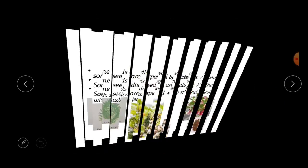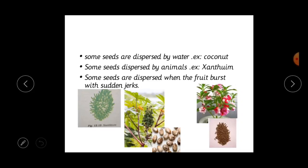Dispersal through water: some fruits or seeds develop a floating ability in the form of a spongy or fibrous outer coat, as in the case of coconut. The fibrous outer coat of coconut helps it float on water. Some seeds are also dispersed by animals — for example xanthium, which has spiny seeds with hooks that get attached to the bodies of animals and are carried to distant places.